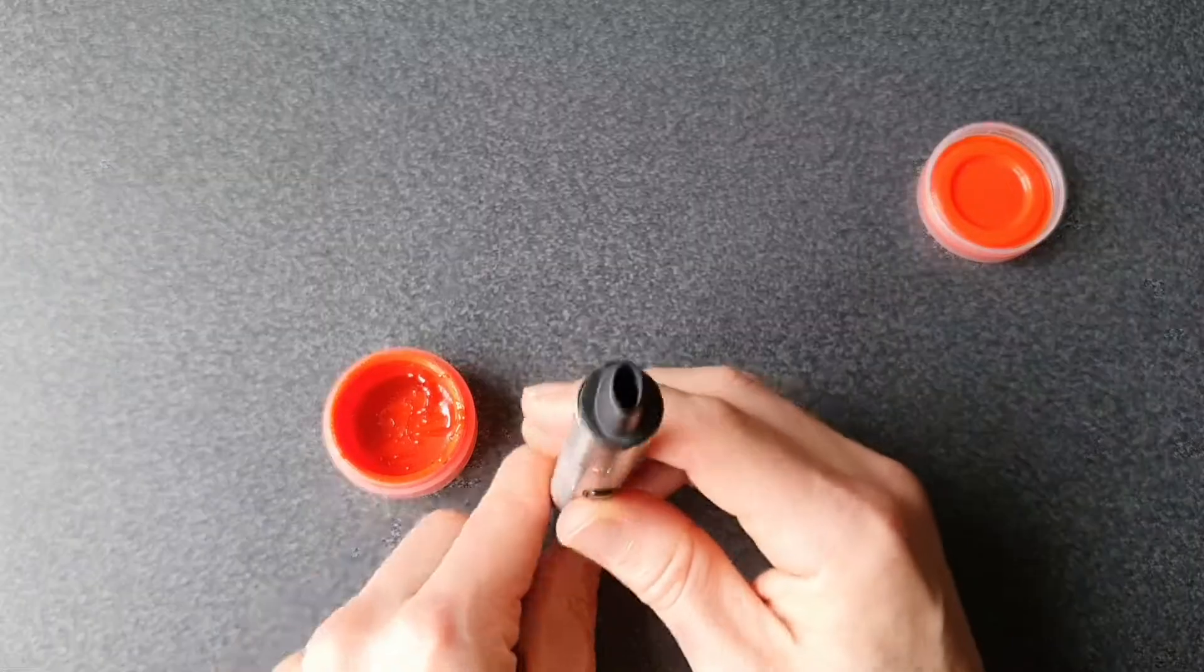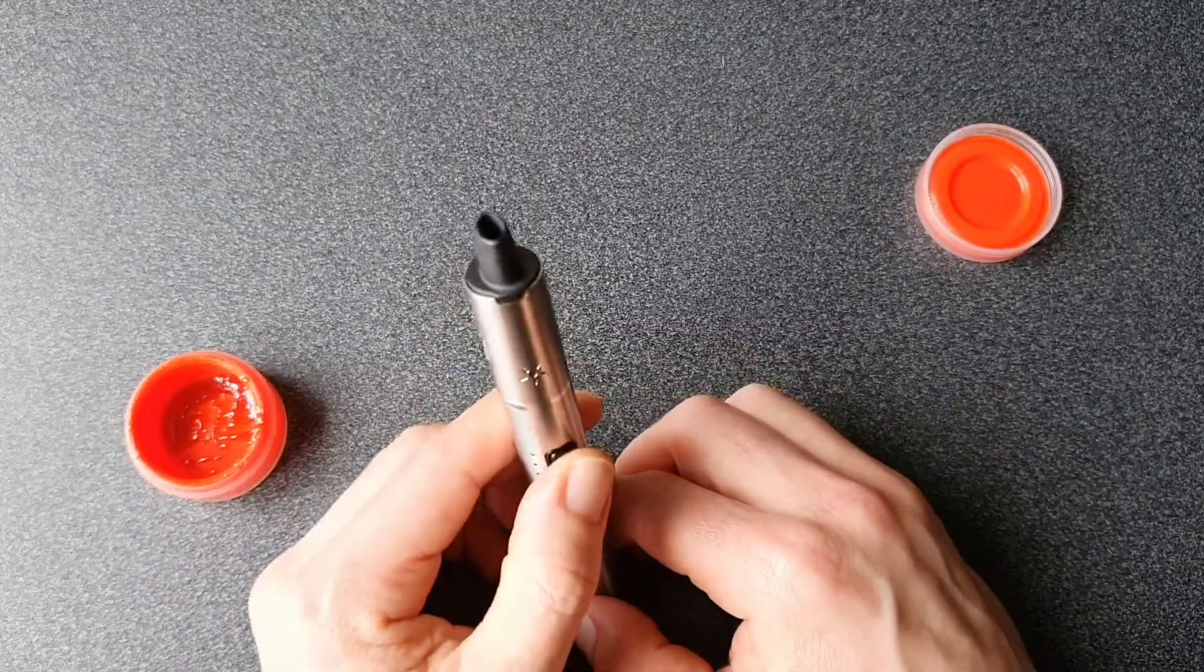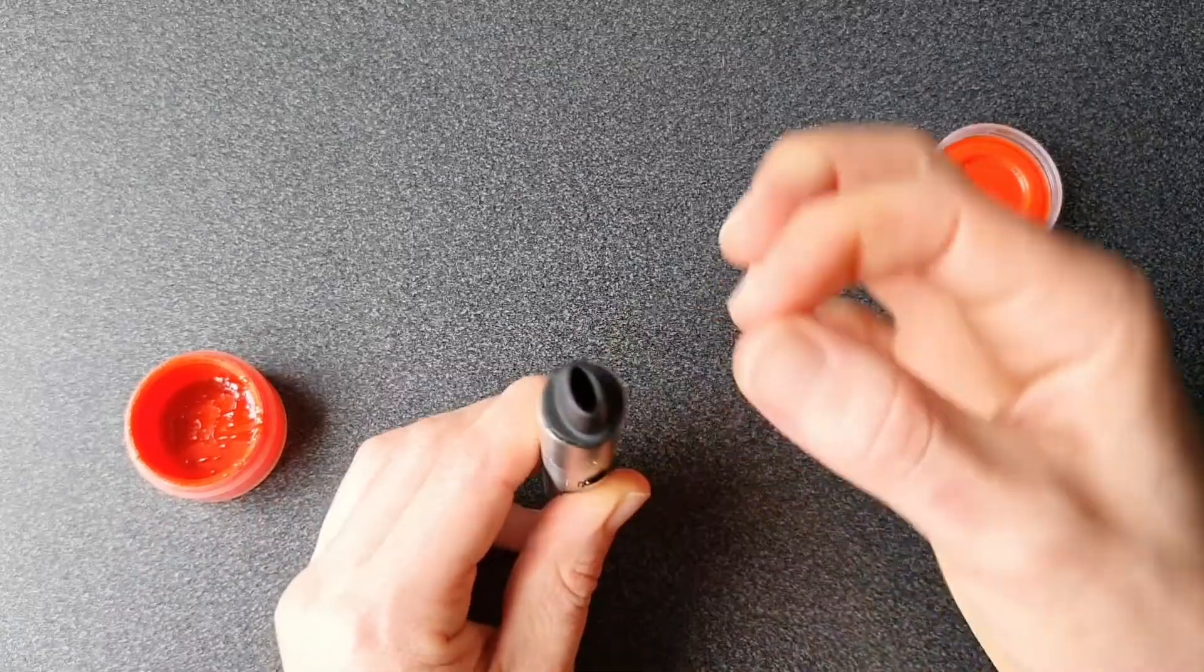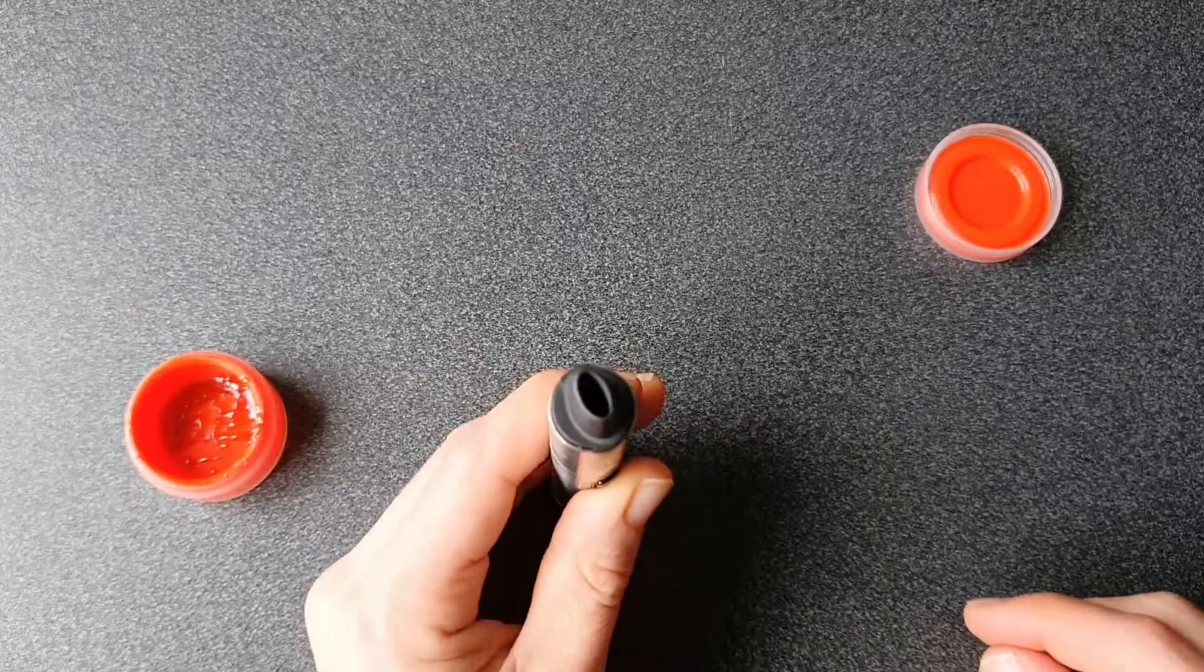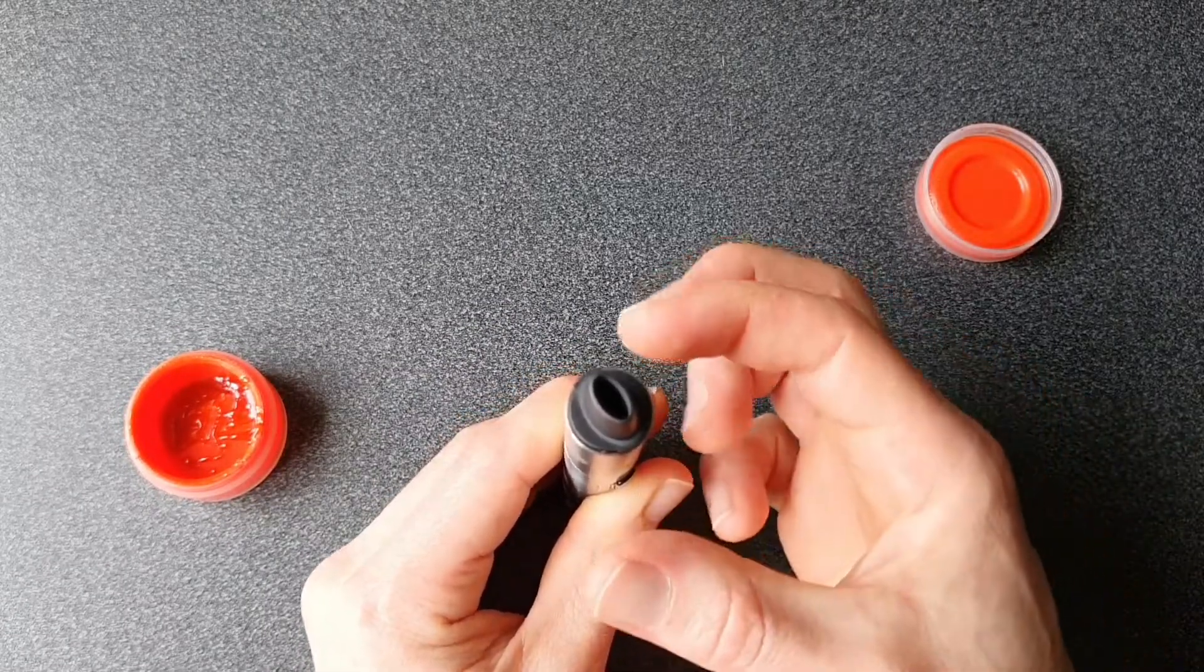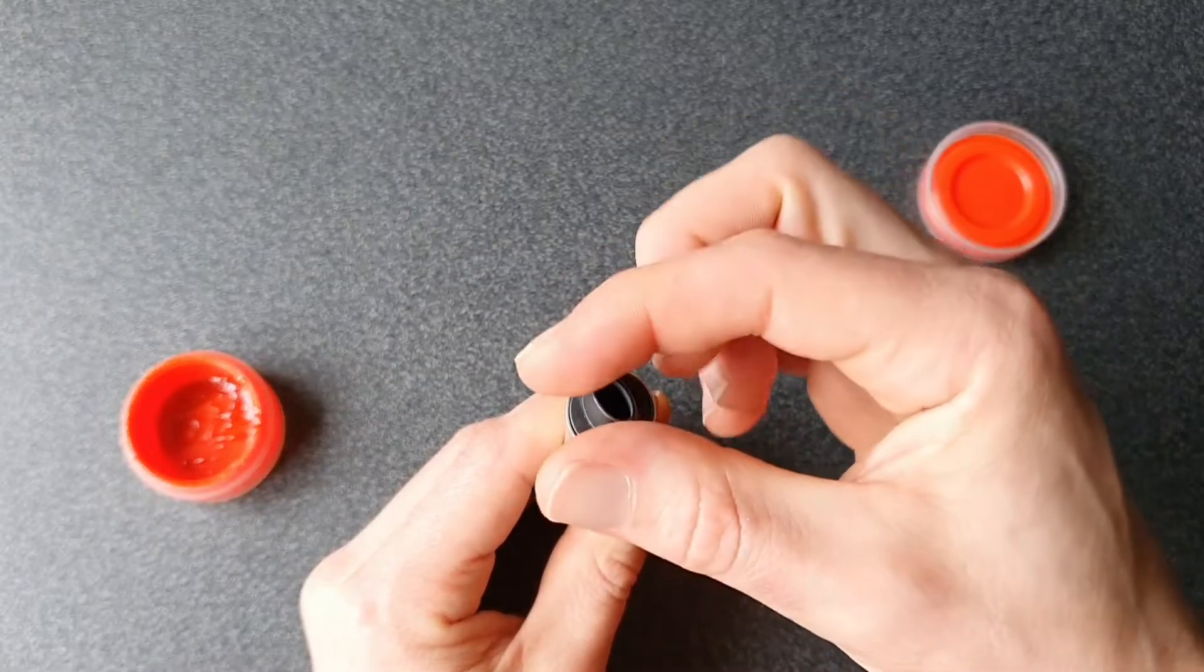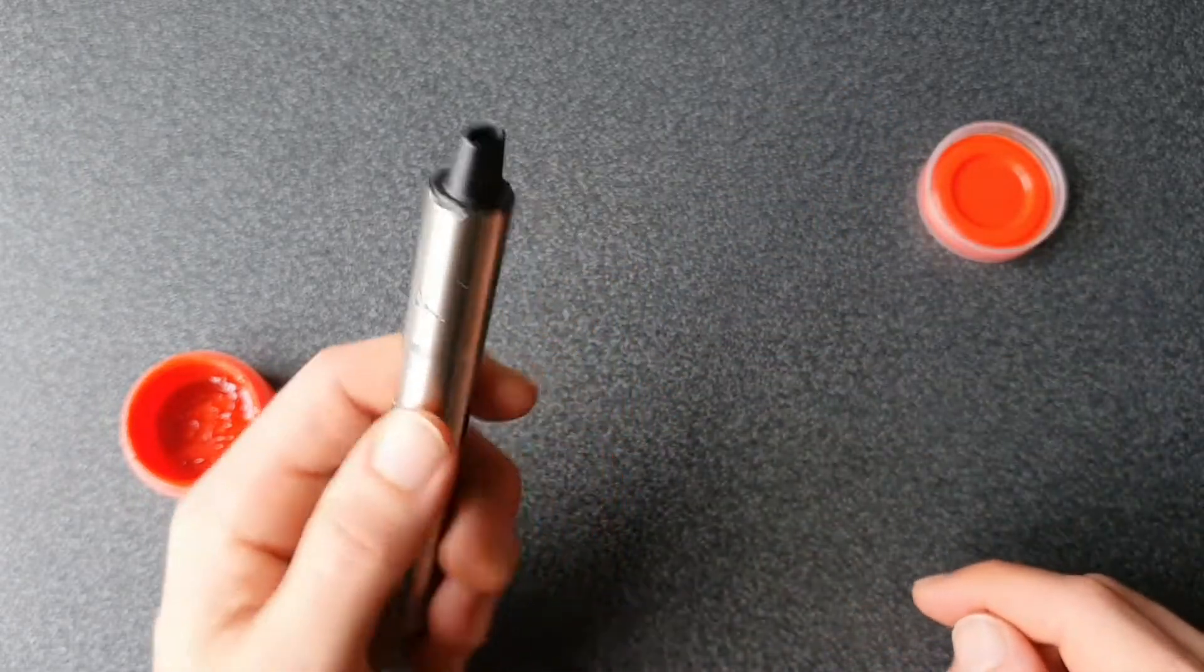Now the dab is suspended on the dab tool above. So there are two ways you can do this. You can either hold down the button for a couple of seconds to allow the dab to transfer onto the tool or what I like to do is hold down the power button whilst inhaling very gently so that the heat is sucked up around the dab and the dab melts and comes off the dab tool onto the coil.